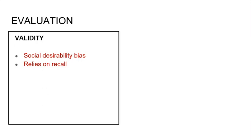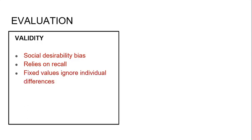The second problem is that it relies on recall — we've got retrospective data. It relies on people accurately remembering what they've experienced, which is particularly problematic because we know that stress causes cognitive impairment. So people's memories may not be as good as they ought to be in those situations, meaning it's not going to be an accurate measurement.